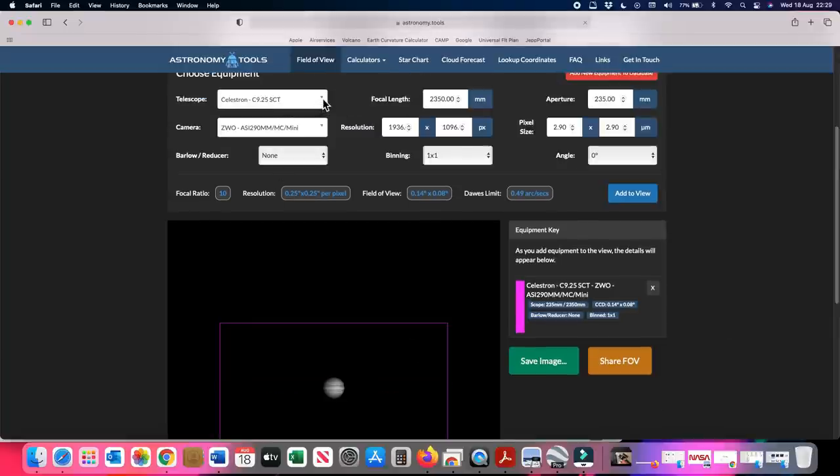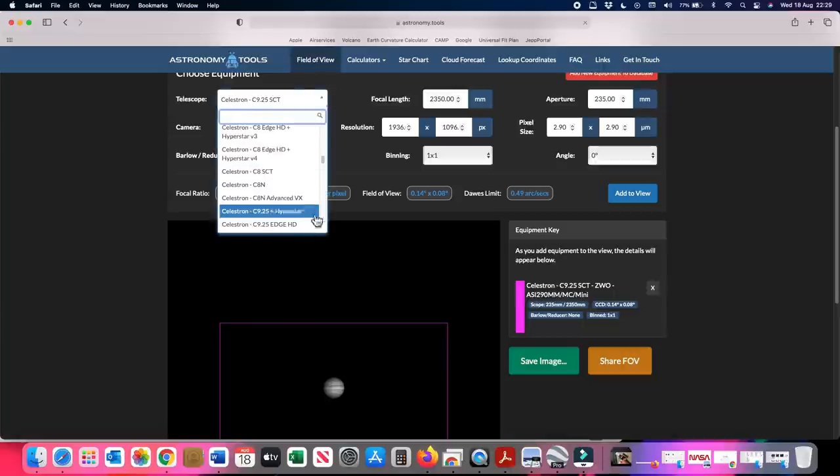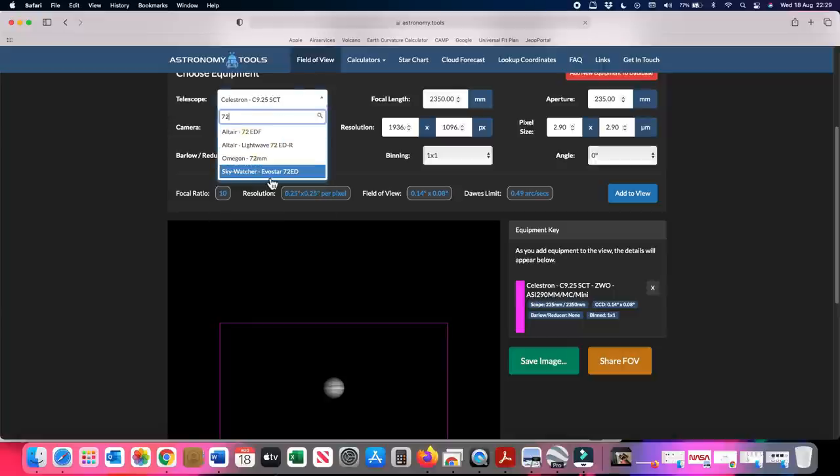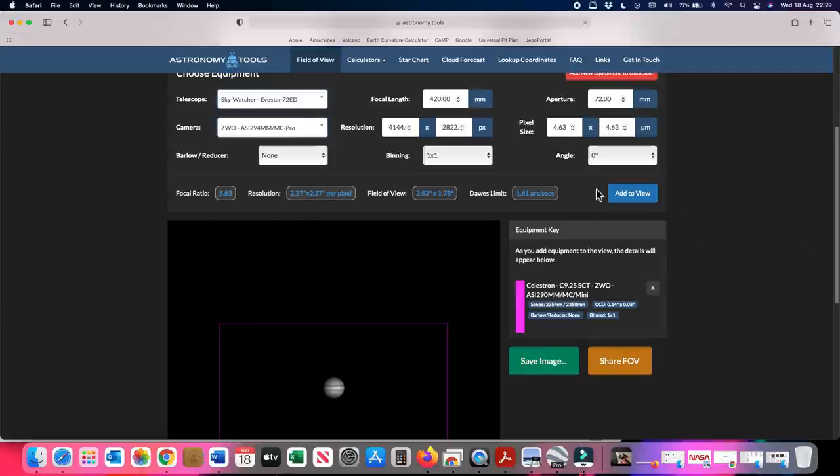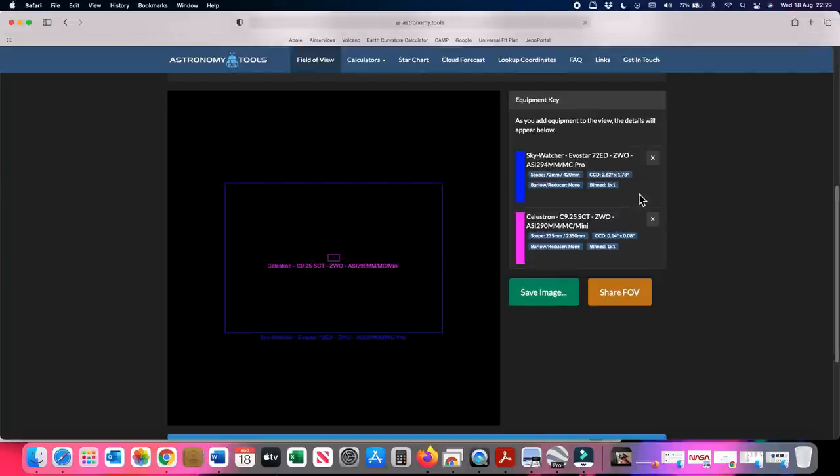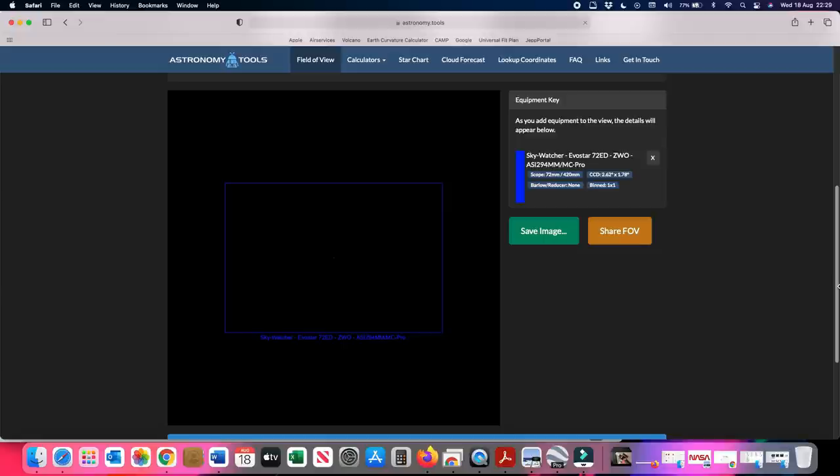Conversely if your target is the planets and you have a small telescope with the wrong camera you're going to see this, and that's not very exciting at all. So you have to match the telescope and the camera to your intended target.